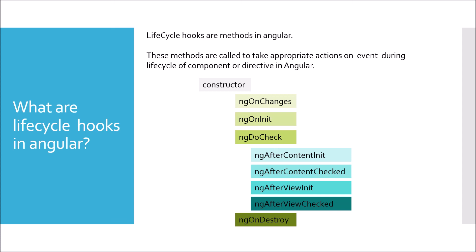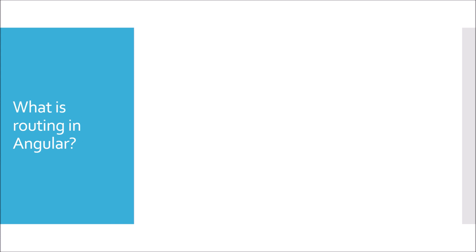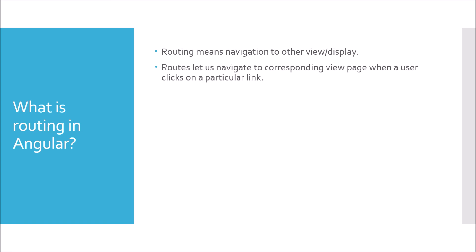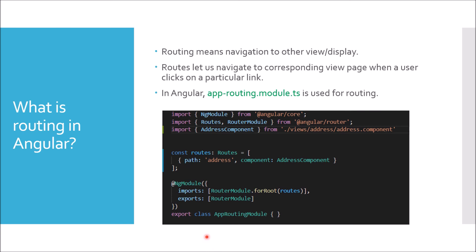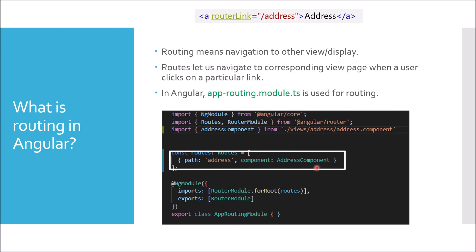Next question: what is routing in Angular? Routing means navigation to another view or display page. In Angular, routing lets you navigate to the corresponding view whenever the user clicks a particular link or button. This is handled through app-routing.module.ts. In the file, you define constant routes — for example, a path of 'address' means that when the user clicks a link with /address, it loads the AddressComponent. This is how a page view is displayed when a link is clicked.